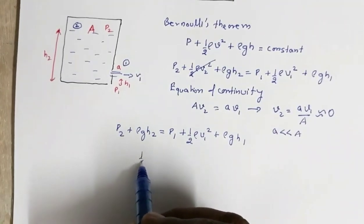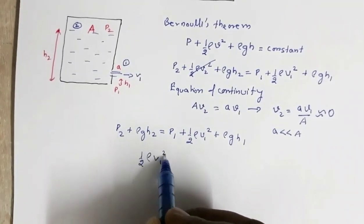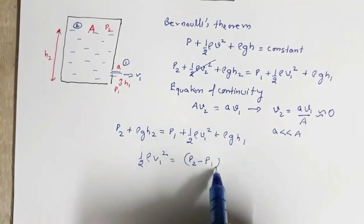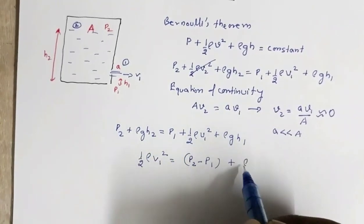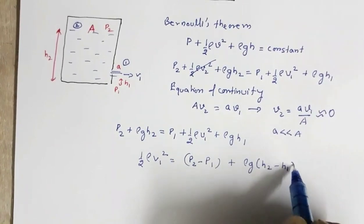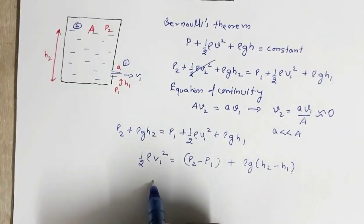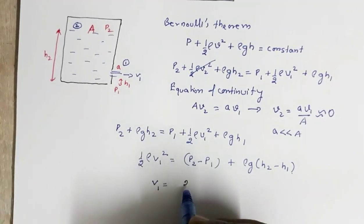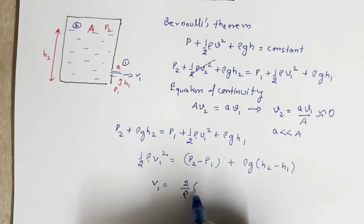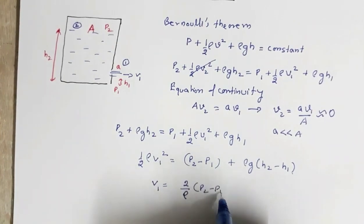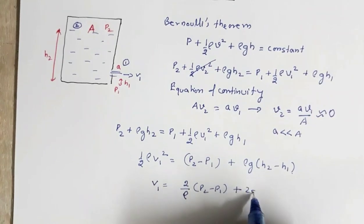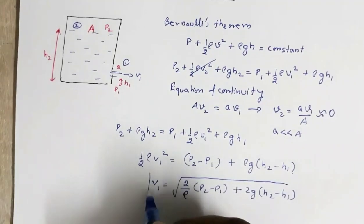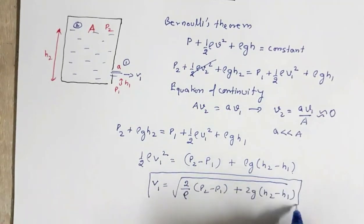So half rho v1 squared equals p2 minus p1 plus rho g times (h2 minus h1). That gives the velocity of efflux v1 equals the square root of (2/rho)(p2 minus p1) plus 2g(h2 minus h1). This is the velocity of efflux.